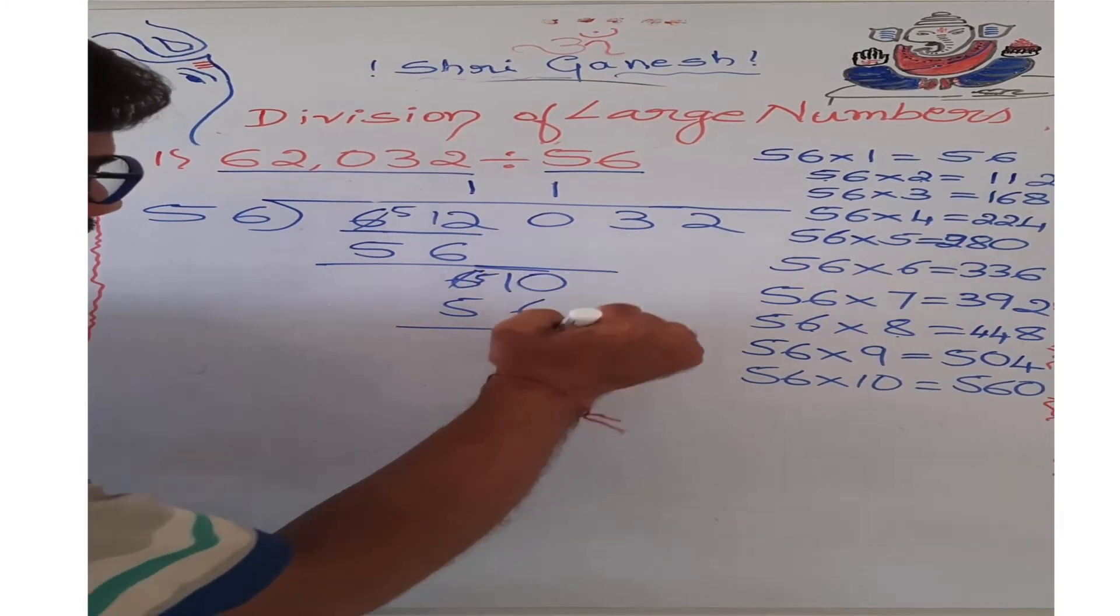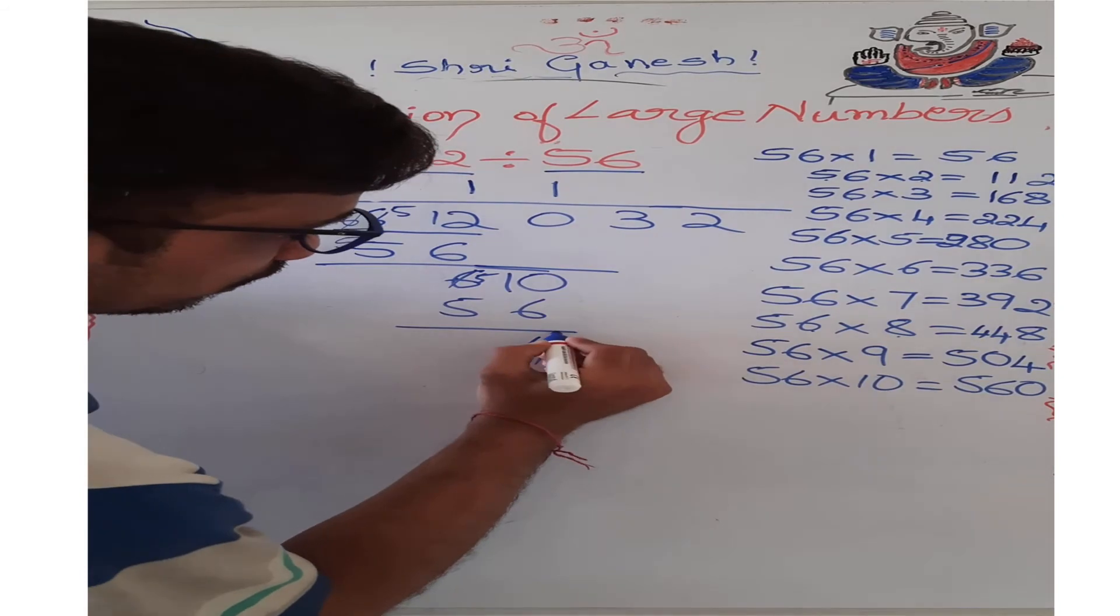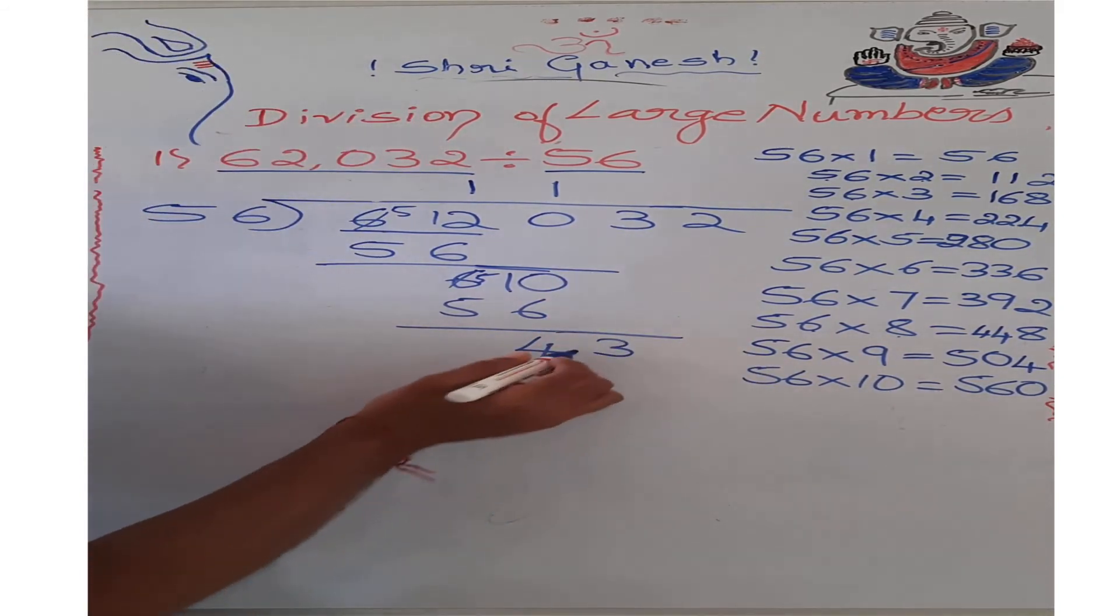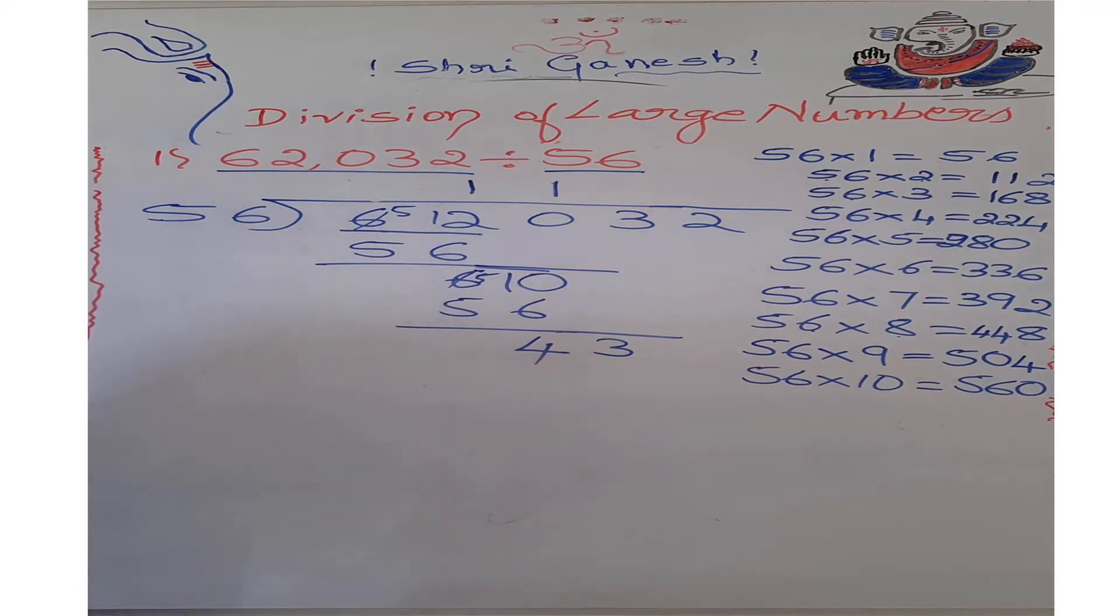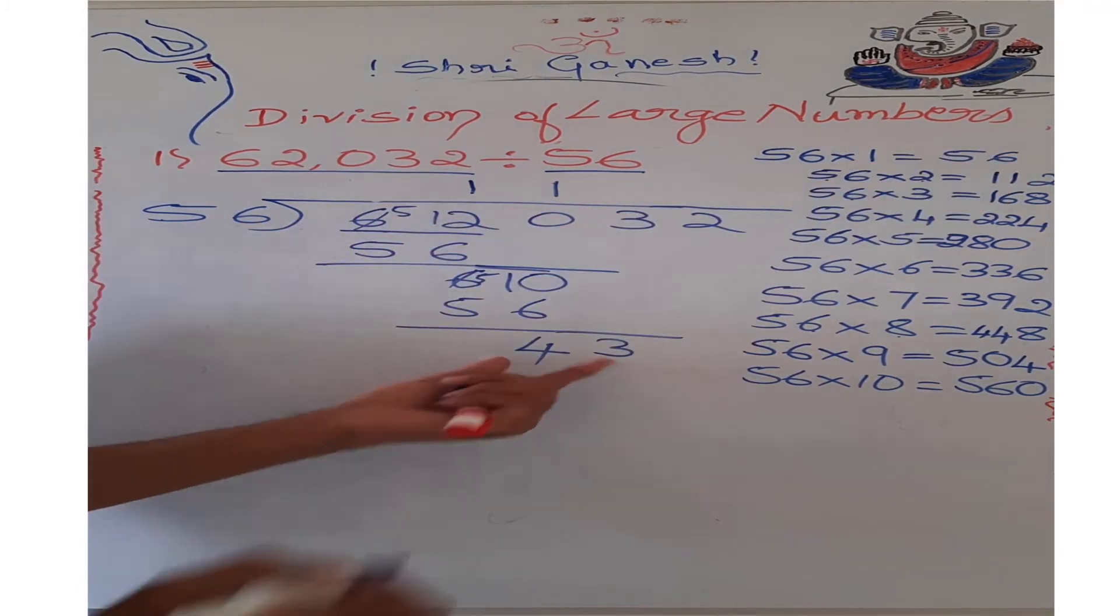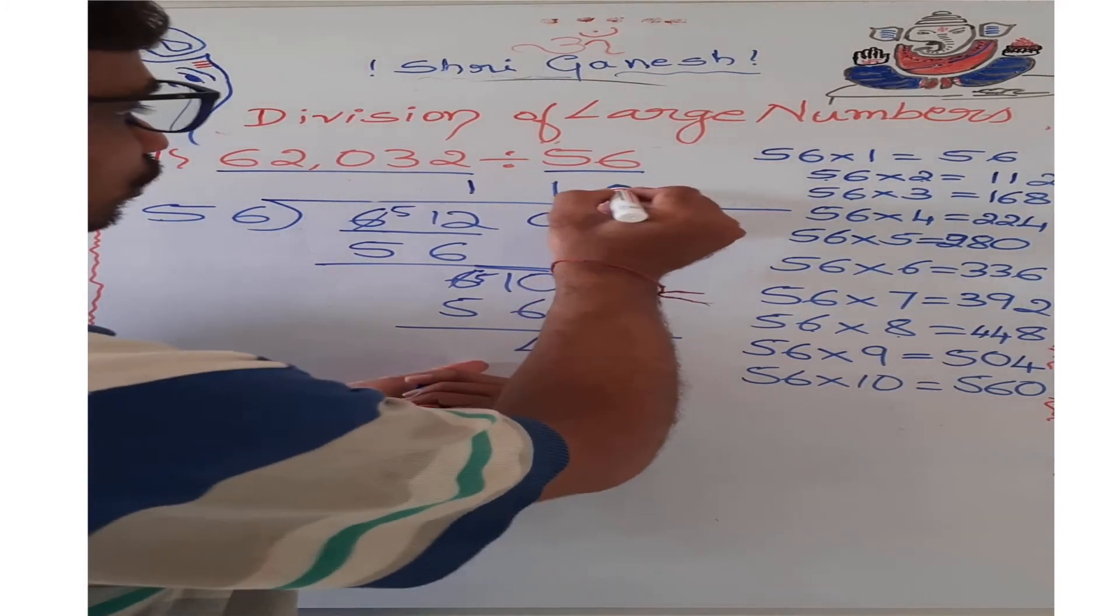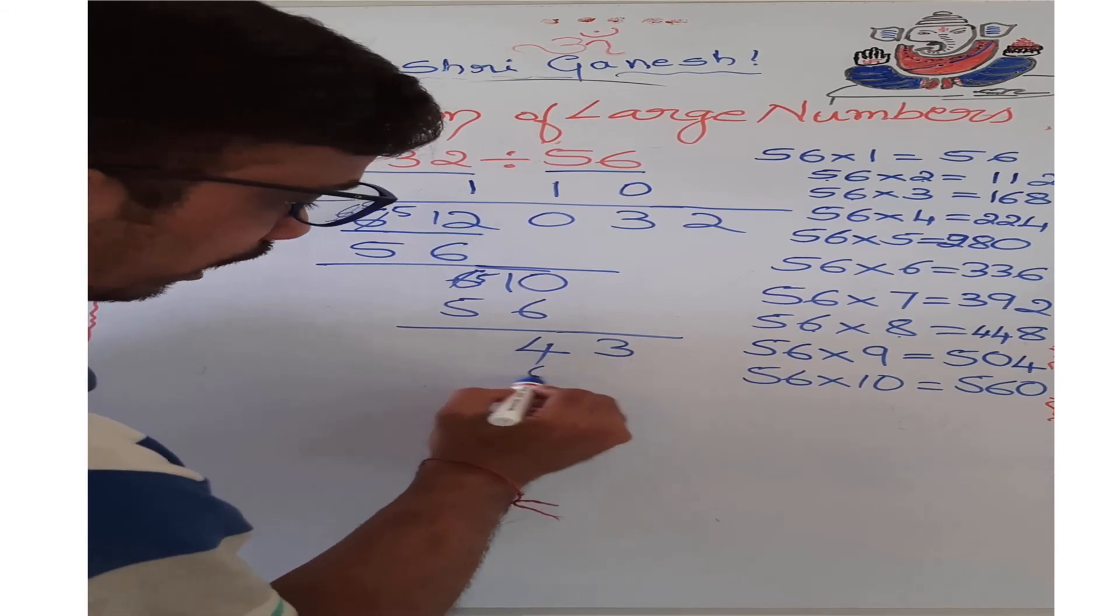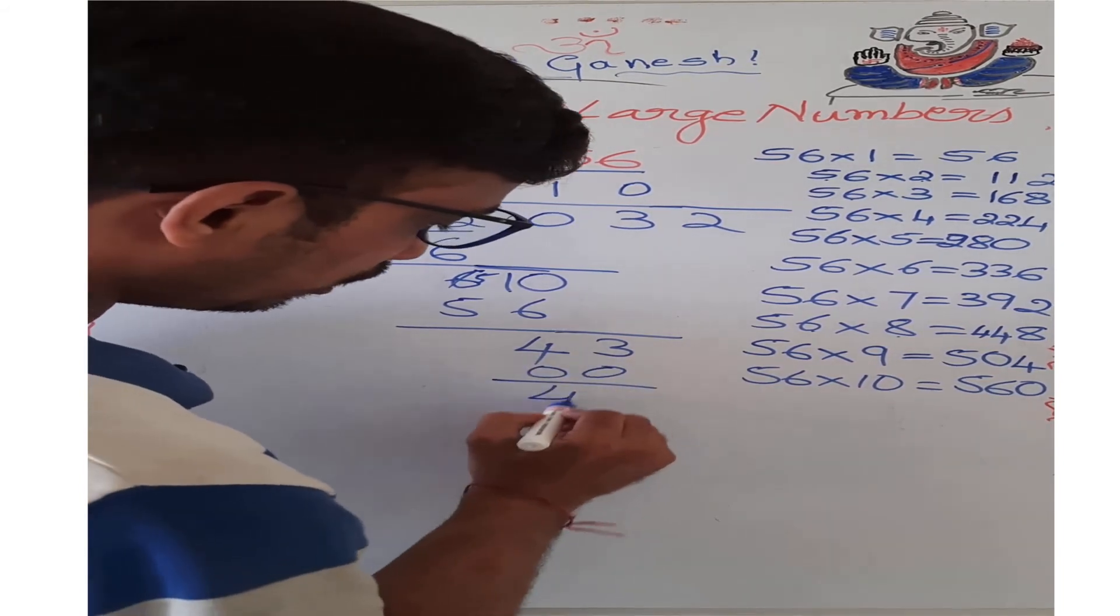We finished with 2, we finished with this 0. Now I will take this 3 down. It became 43. 43 is smaller than that. Therefore, 1 time if I take it is smaller. So here we need to take 0. 0 times, again I will get a remainder as 43.